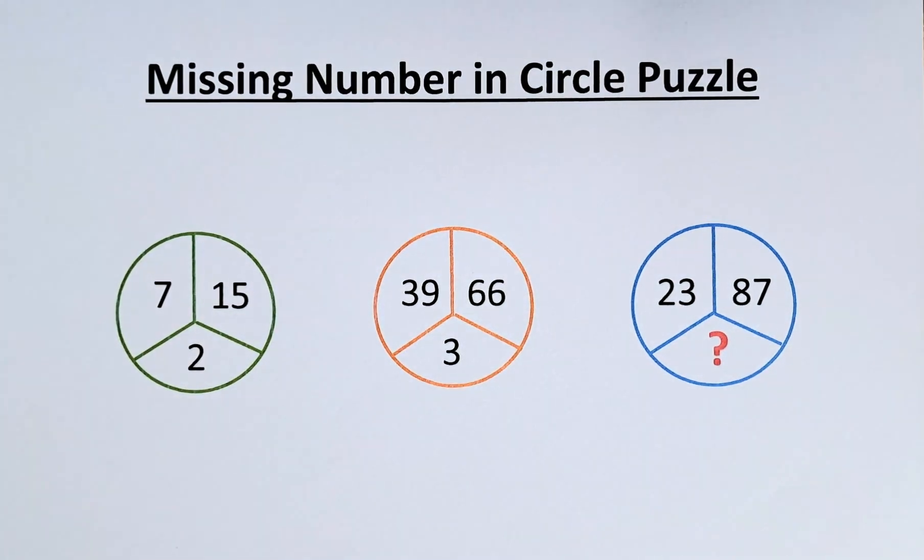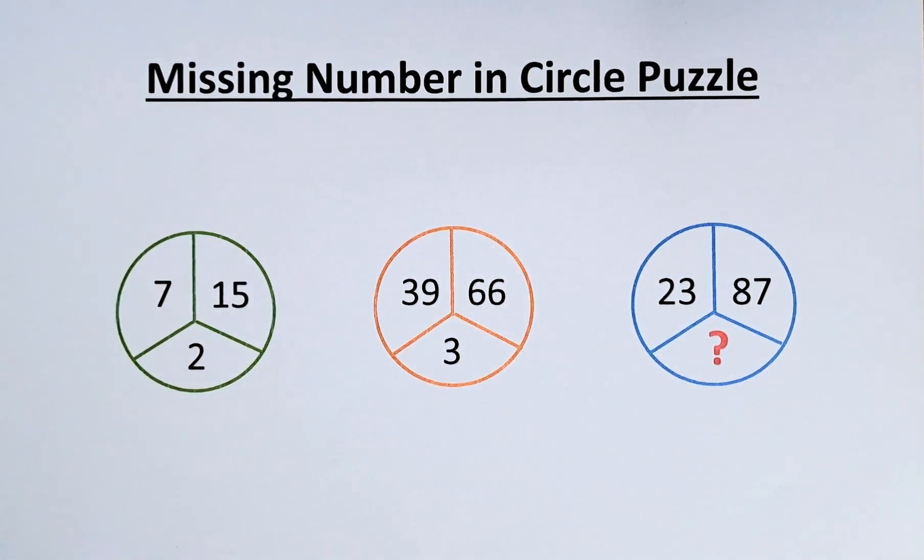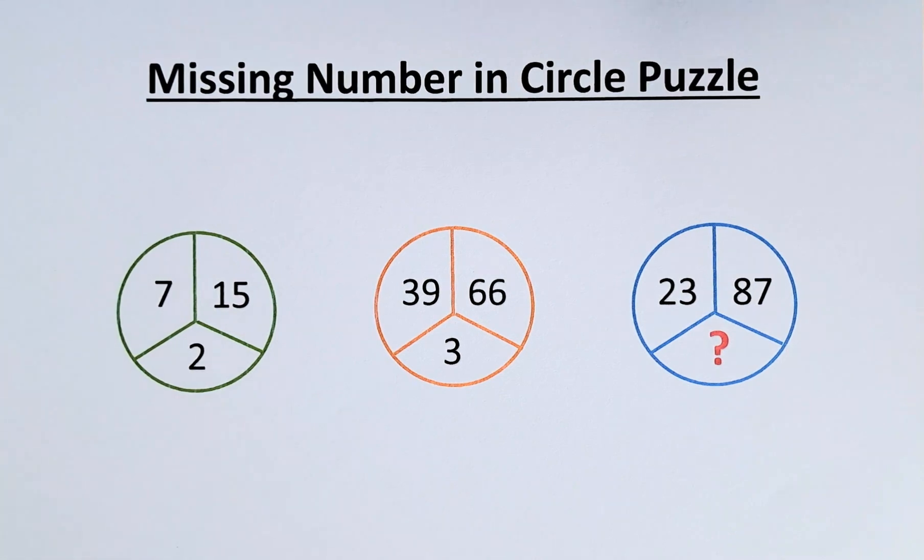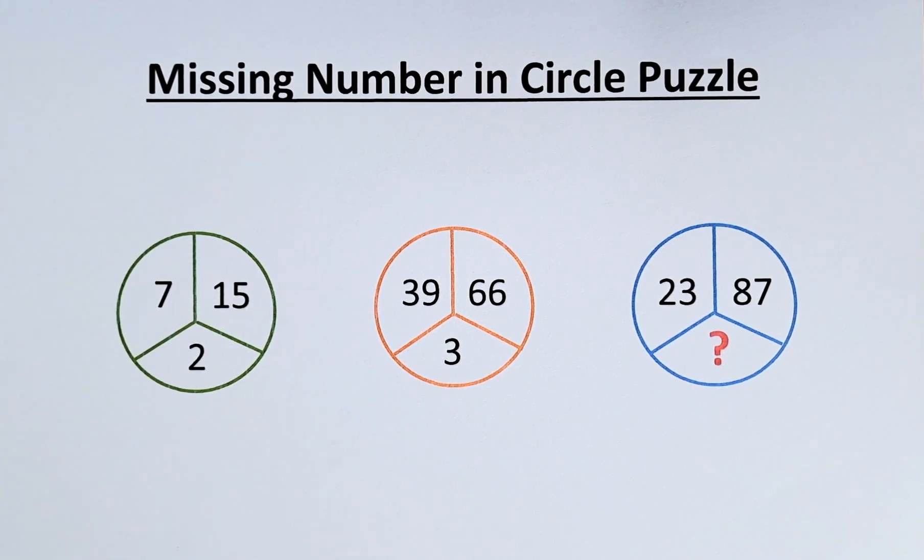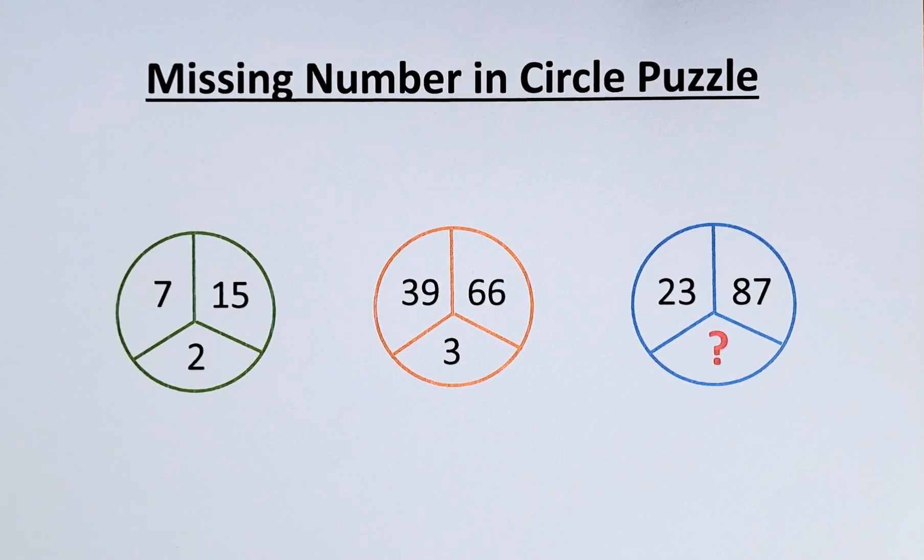Are you able to find the missing number in this circle puzzle? The numbers in the green circle are as follows: 7, 15 and 2. In the orange circle we have 39, 66 and 3. And in the blue circle we have 23, 87 and a question mark.